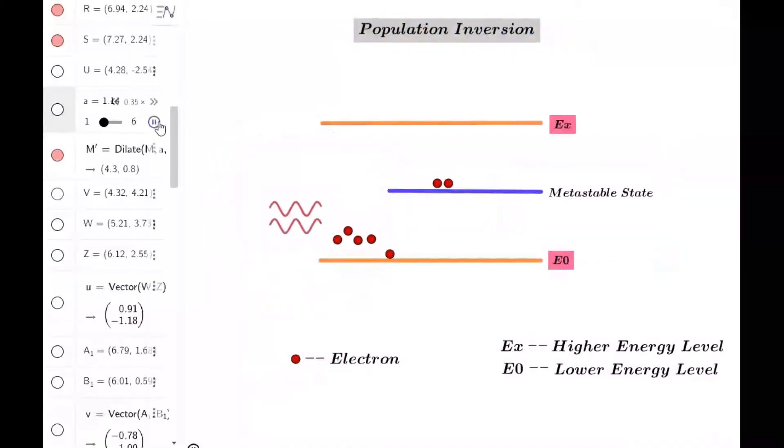In an atomic system, the number of atoms in ground state are more than excited state. This is because of tendency of electrons to stay in metastable state. But in order for more photons to be emitted, there should be more electrons in excited state. This process is achieved through optical pumping and this is known as population inversion.